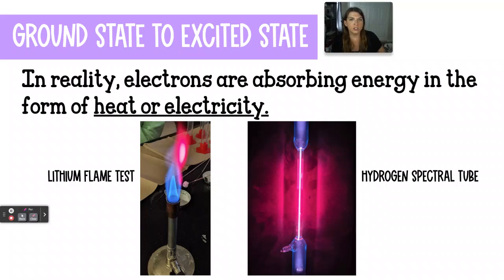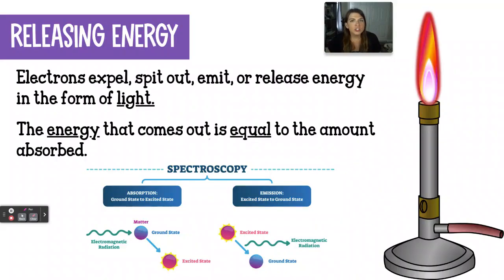When the electrons are releasing all of that electrical energy that they had absorbed, they're releasing it back in the form of light. So just think of it like an energy conversion. In the first case, heat goes in, light comes out. In the second case, electricity goes in, and light comes out. The energy that the electron spits out is equal to the amount that it had absorbed.